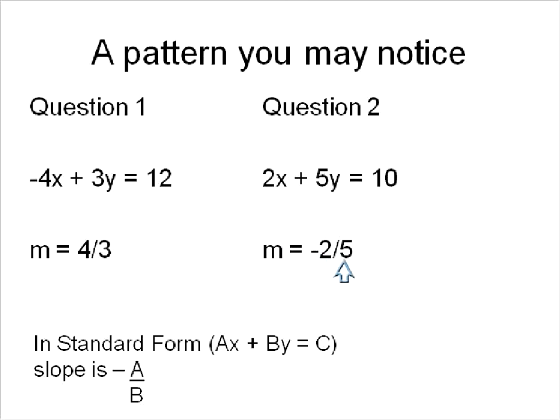Our slope in our second one is negative 2 over 5. There's a 2 there, and there's a 5 there. Only this one's a negative, and this one turned from negative to positive.